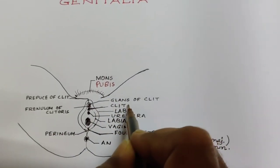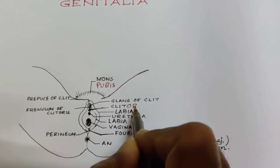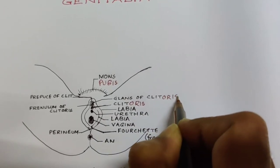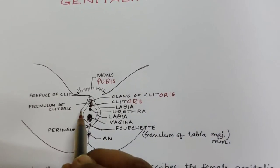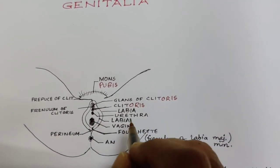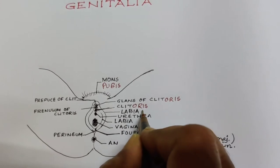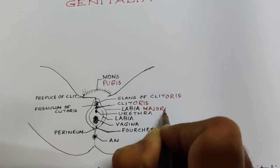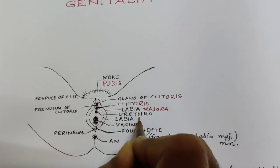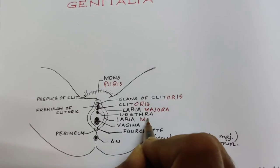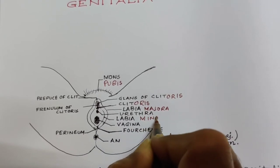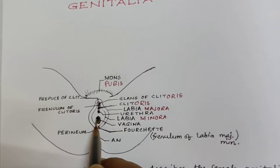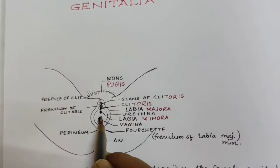This is the clitoris. This is the glans of clitoris. This part is labia majora, or labia magus. This one is labia minora — minora is inside. And this is the vaginal opening.